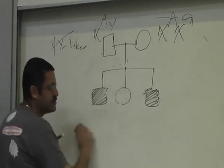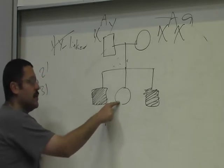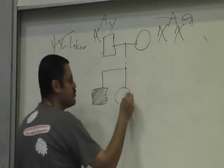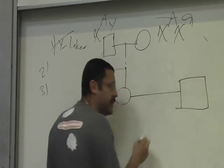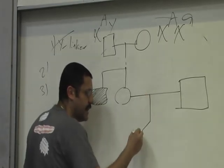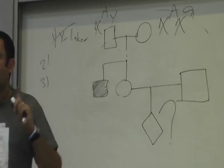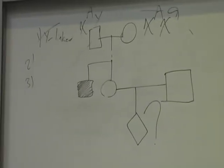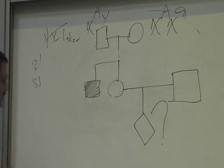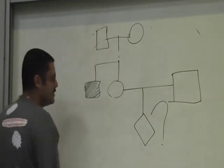Let me tell you how convoluted the pedigree I can ask you. If this woman is married to a normal man — and I'm telling you this is colorblindness, which is X-linked recessive — this woman is married to this man and they are planning to start a family. What is the probability that their firstborn is colorblind? So take 20 to 30 seconds to think about it and we'll work it out.